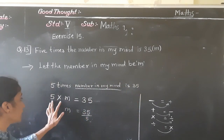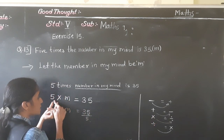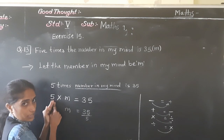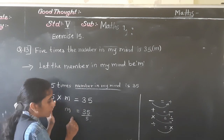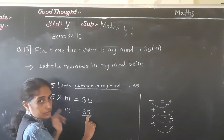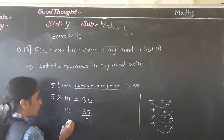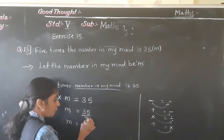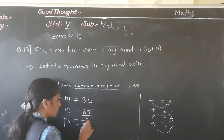Now see here: 5 into n — the operation is multiplication. If we transfer 5 to the right hand side, then it will become division. So n = 35 upon 5. Therefore n = 7, since 5 sevens are 35.